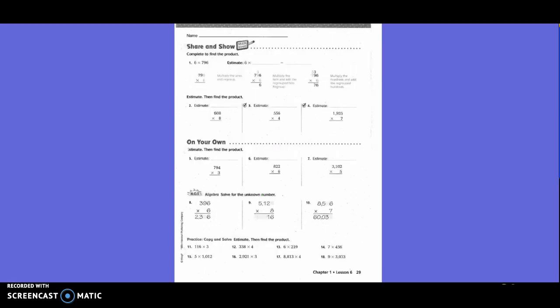Share and show. So first of all, they would like us to complete to find the product. First of all, they would like us to do the estimate. So 6 times 796. So they want us to take 6 times, what would be a good estimate for 796? 800. So I write 800 on my paper. 6 times 8 is 48, and add two zeros. Oh, and I put my comma in the wrong spot, so I need to fix that. So I'm going to add my two zeros and then put my comma in. So that's my estimate.